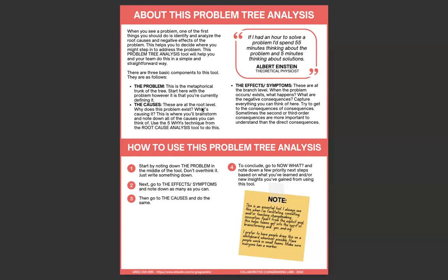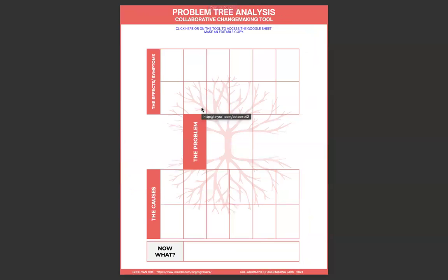So how do we use this? I'll walk you through it using the language from the how-to section and show you the actual tool. Start by noting down the problem — you'll see there's a section in the middle of the tool. Don't overthink it, just write it down. This can help you get over paralysis and get started discussing things as a team. Next, go to the effects and symptoms and note down as many as you can, up at the branch level. You can also start at the causes level, or do both at the same time. Then go to the causes and do the same. You'll see there are 12 boxes in each — you might have fewer or more.